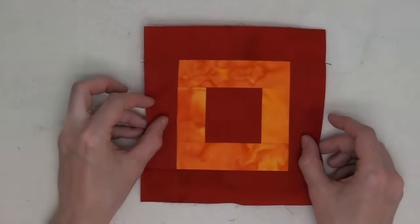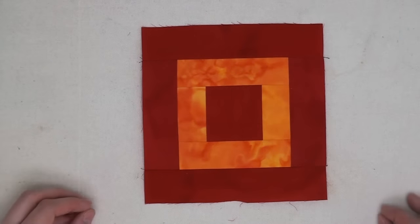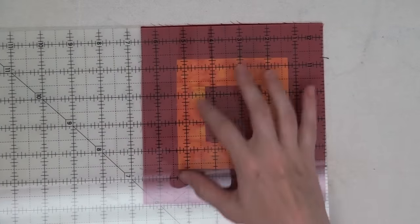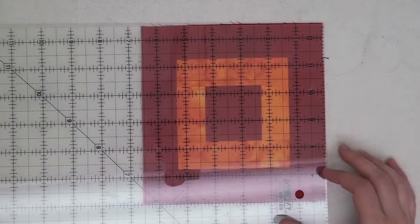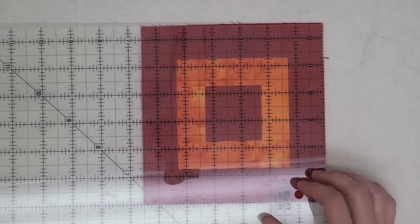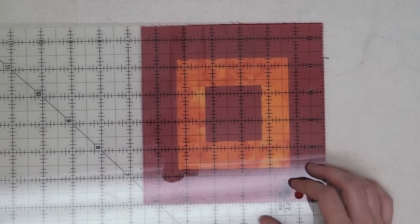And here's what your log cabin block will look like when it's finished. Make sure to take your ruler and place it over the block and make sure that it comes out the exact right size. If it ends up a little bit big trim it down so it's exactly the right size before we move to the next step.